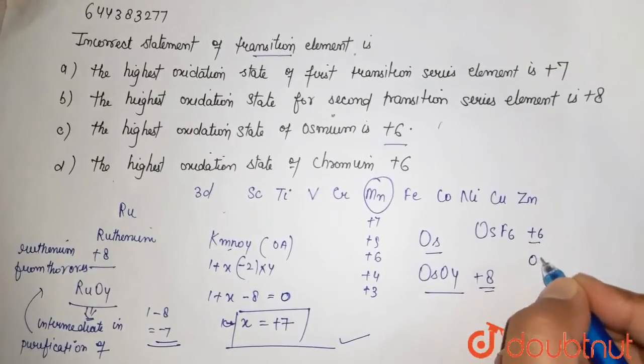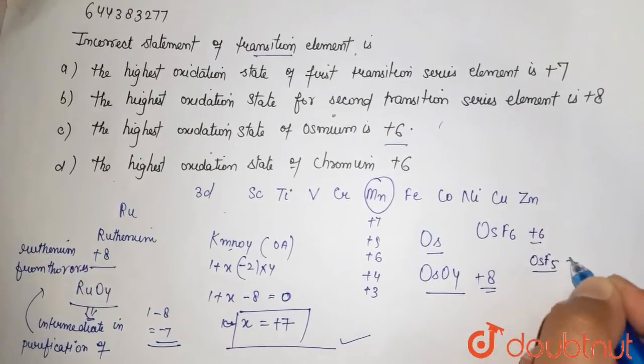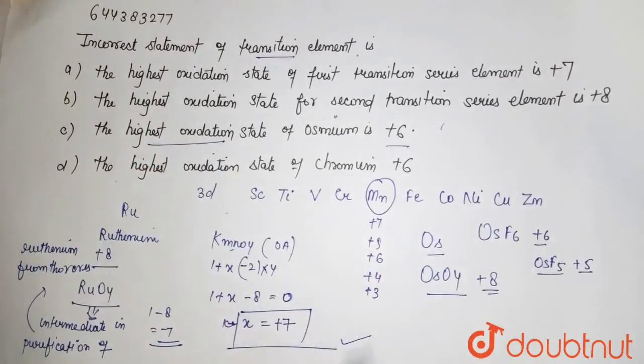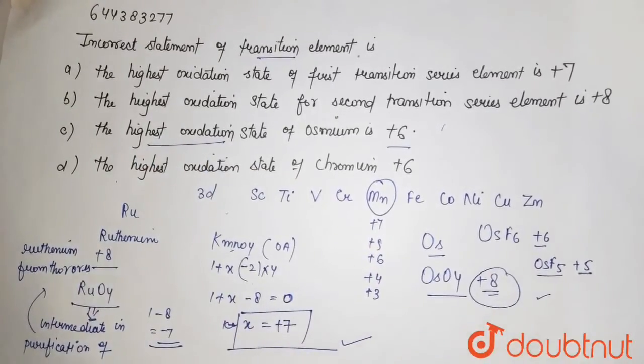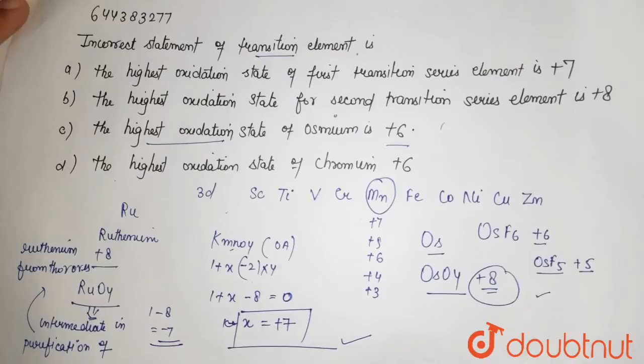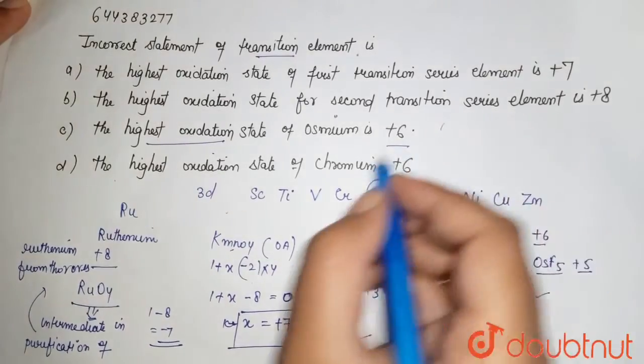oxidation state. But the highest oxidation state is +8, not +6. So the statement that osmium's highest oxidation state is +6 is wrong.